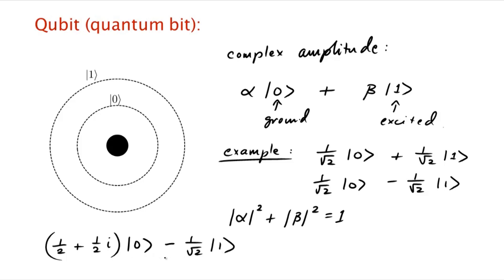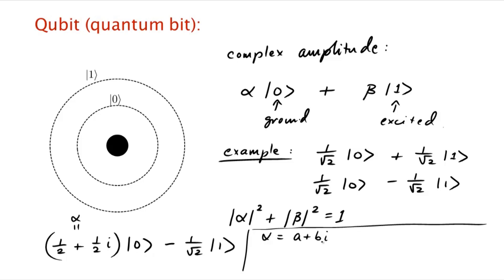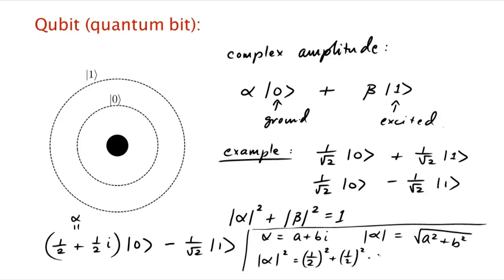So, is the state normalized? What's the square of the magnitude? If this is alpha, what's the square of the magnitude of alpha? Let me remind you about complex numbers. If alpha equals a + bi where a and b are real, then the magnitude of alpha is √(a² + b²). So in this case, |alpha|² would be (1/2)² + (1/2)² which is 1/2. And the magnitude of beta squared is also 1/2, so it's a normalized state.